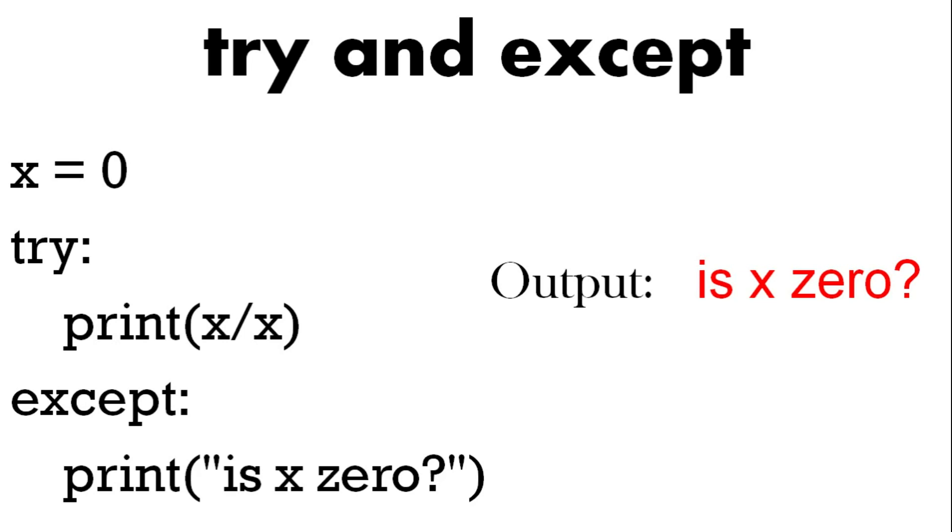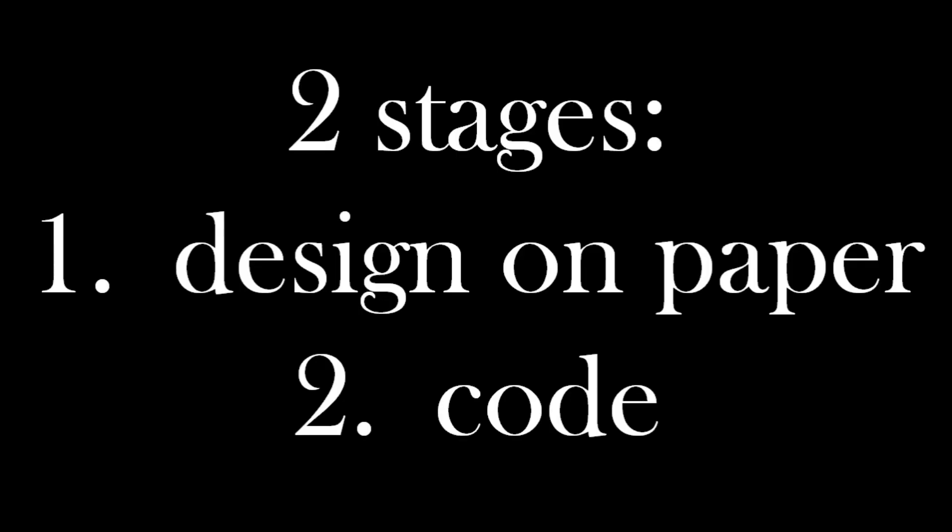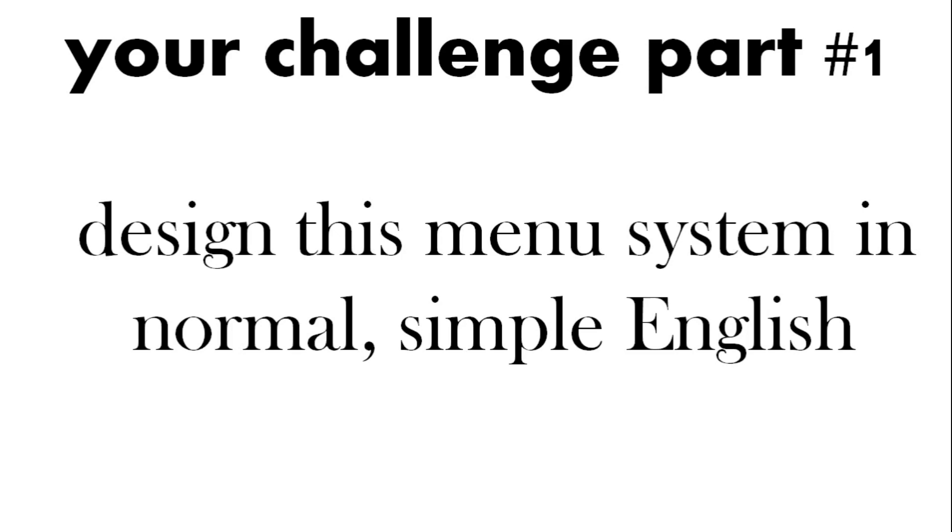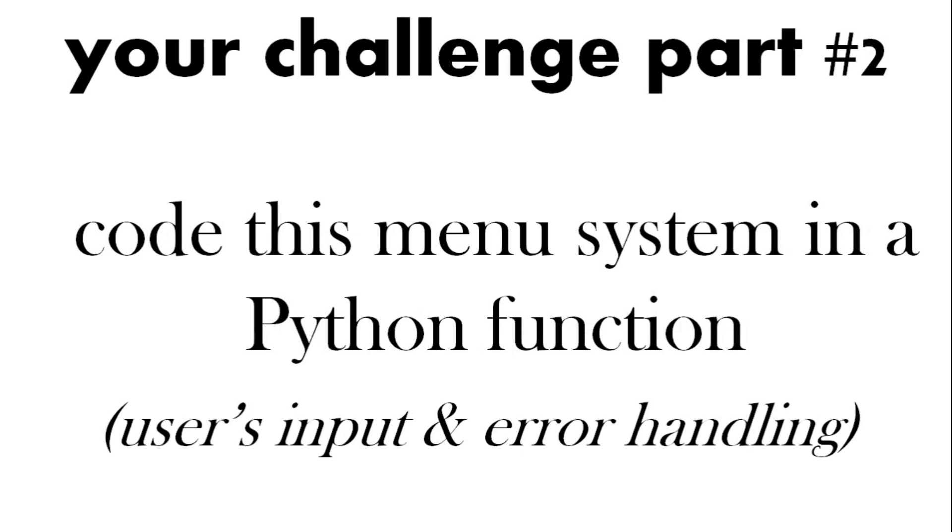So your task is set in two stages. The first stage I want you to try to design your code on paper. So design your program without coding it if you like. So you can use just normal English. And the second part is to turn that into code. So to make that clear, your challenge part one: design this menu system normal simple English. Your challenge part two is to code this menu system in a Python function.